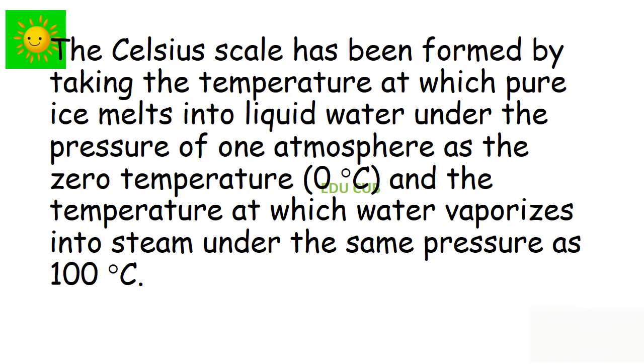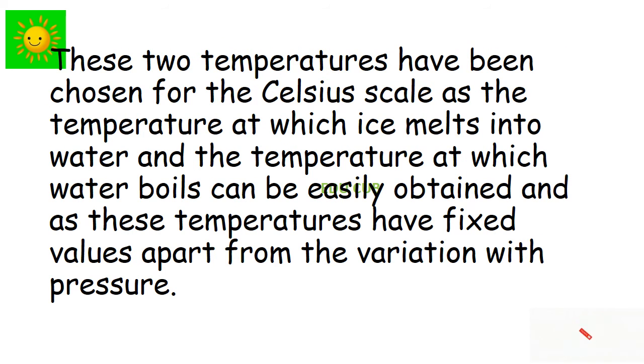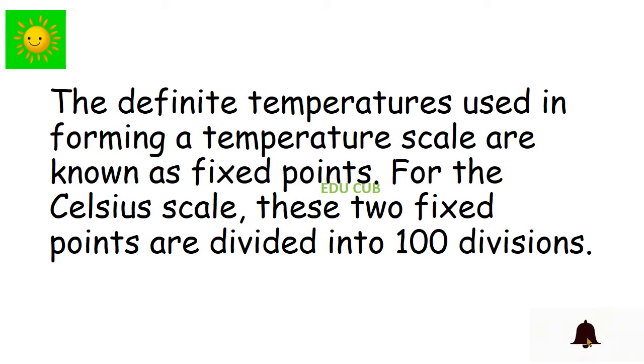Celsius scale. The Celsius scale has been formed taking the temperature at which pure ice melts into liquid water under the pressure of one atmosphere as the zero temperature and the temperature at which water vaporizes into steam under the same pressure as 100°C. These two temperatures have been chosen for the Celsius scale as the temperature at which ice melts into water and the temperature at which water boils can be easily obtained and as these temperatures have fixed values apart from the variation with pressure. The definite temperatures used in forming a temperature scale are known as fixed points. For the Celsius scale, these two fixed points are divided into 100 divisions.